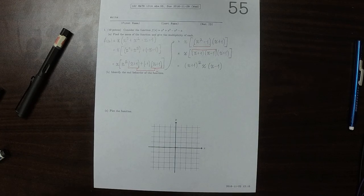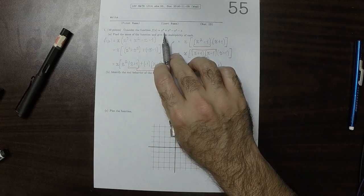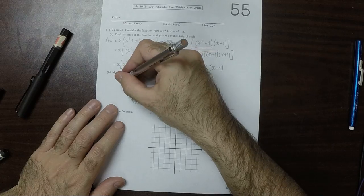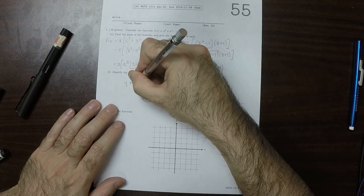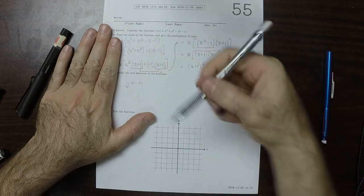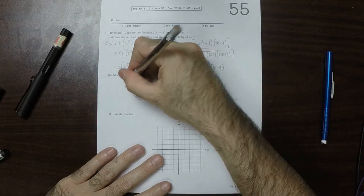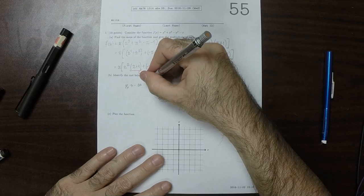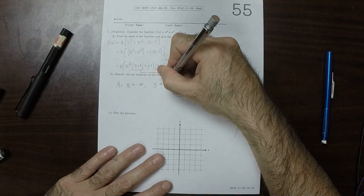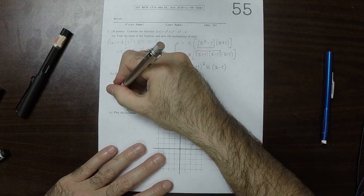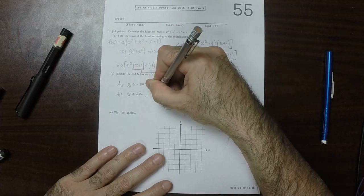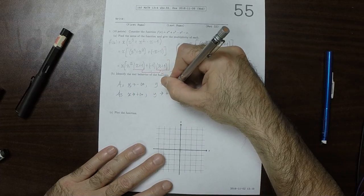Okay, so this is a quartic, and it has a positive leading coefficient, which means that as x goes to negative infinity, it must be the case that y goes to positive infinity. And as x goes to positive infinity, y goes to positive infinity.